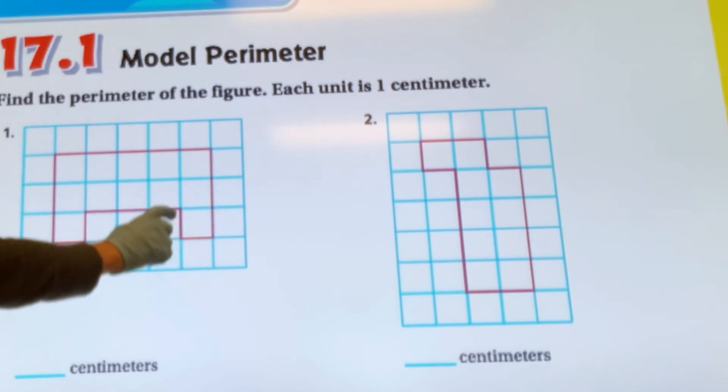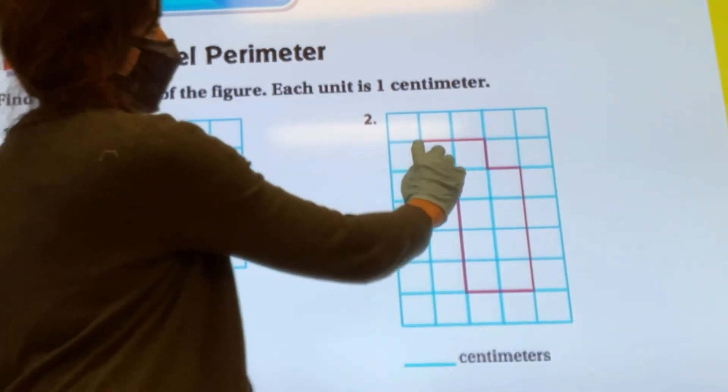When you are finding the perimeter of a shape, it is the distance around the shape, keyword around.